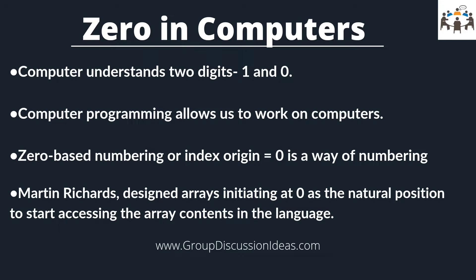Now let us understand the uses of zero in computers. A computer is made to understand two digits, that is one and zero. For computers, one represents true and zero represents false. Using the combination of multiple ones and zeros, the empire of computers was established.